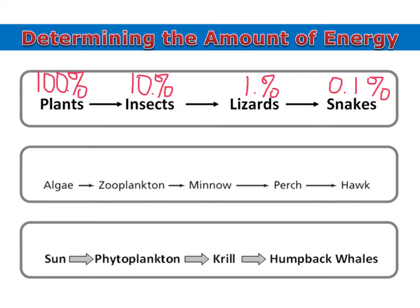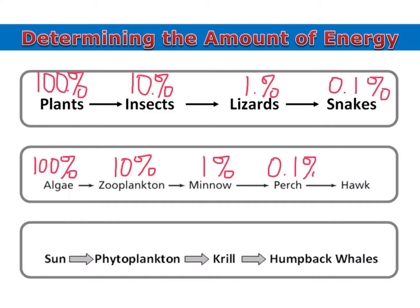Here's a longer food chain. Algae are the producers, so they have 100%. Move the decimal over one: 10%. Move it again: 1%. Move it again: 0.1%. And move it again: 0.01%.